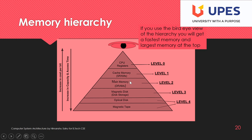We get the fastest memory because we have CPU registers at the top. We get the largest memory because we can use memory from the magnetic disc whenever required, and it can be transferred to main memory. Going from bottom to top there is an increase in cost per bit — the bottom is the cheapest memory and the top is the costliest.